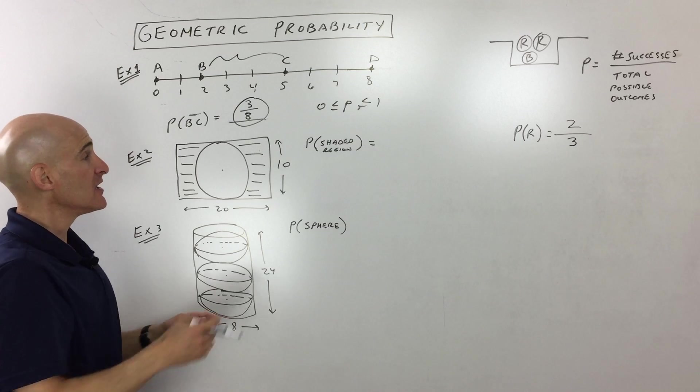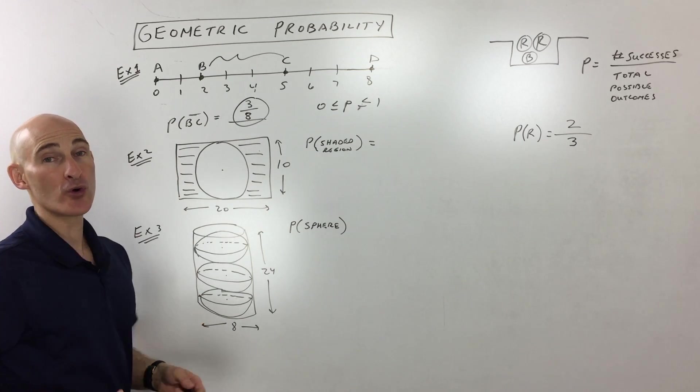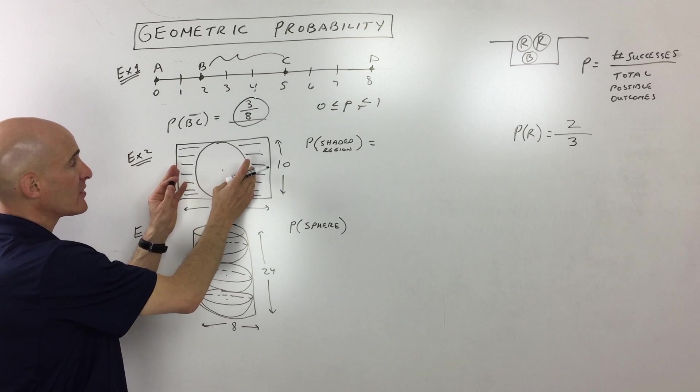So again, what we want to think about is what do we want? Well, we want the area of success, the area of success, which is the shaded area, divided by the total area. Well, let's talk about this area of success.